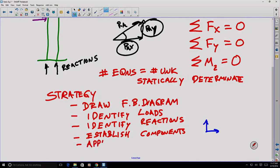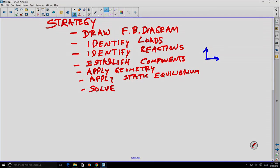We apply geometry where it's helpful. For example, if we know there's some relationship between RAx and RAy, we include those equations. We apply static equilibrium and then we solve for the reactions. Let's put this strategy into action.